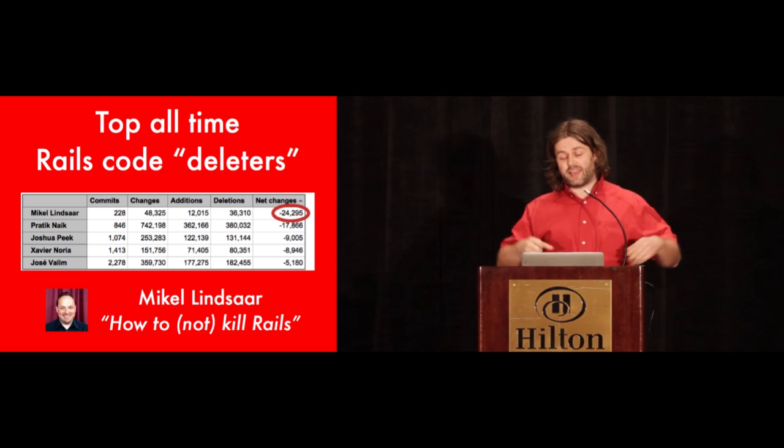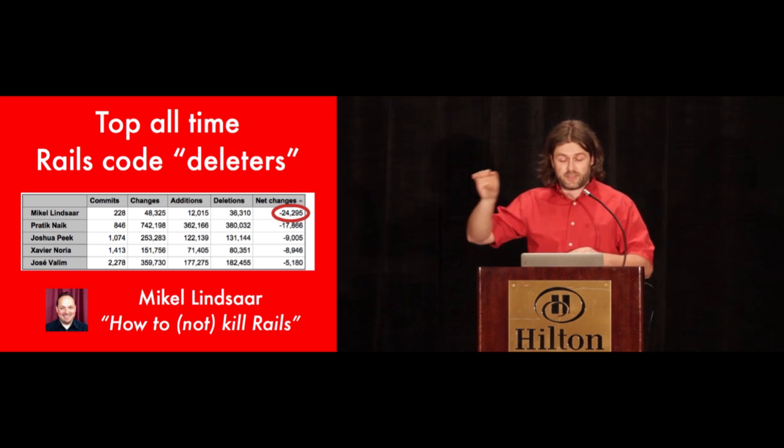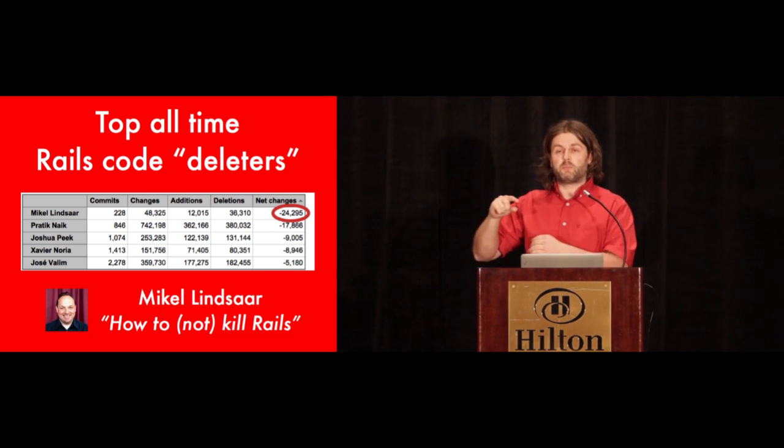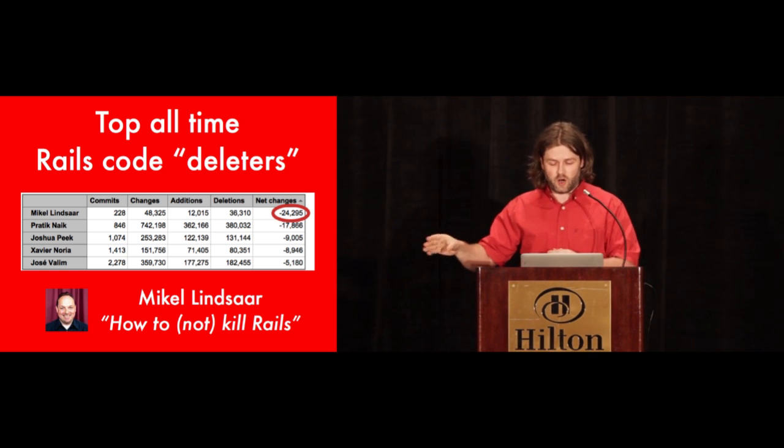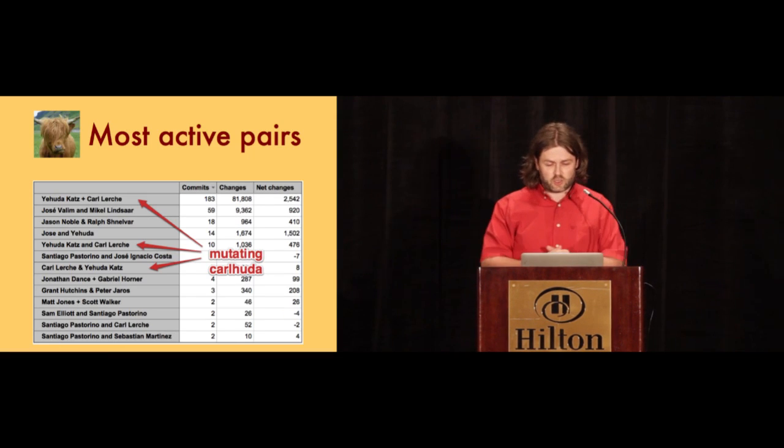Let's take the top all-time Rails code deleter, and the number one position is Michael Linsar. His net contribution is minus 24,000 lines of code. He was going to talk about how to kill Rails today, but I don't know why he cancelled his talk.